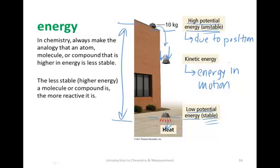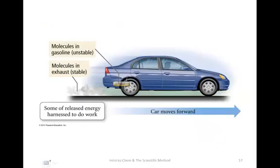We can think about why a chemical reaction or chemical process occurs due to this progression from unstable high potential energy to more stable lower potential energy. In General Chemistry 2, we'll incorporate kinetics and entropy to round out our understanding of why chemical processes occur, but for now we can think of it as going from high potential energy to lower, more stable positions.